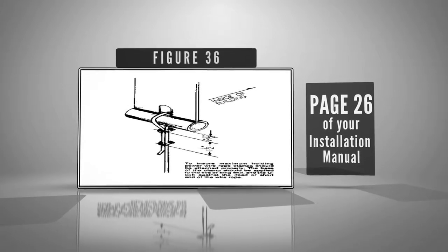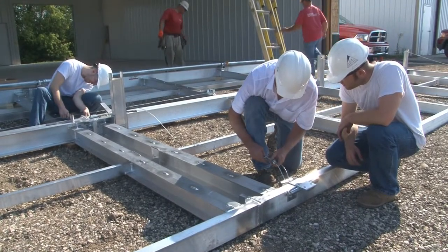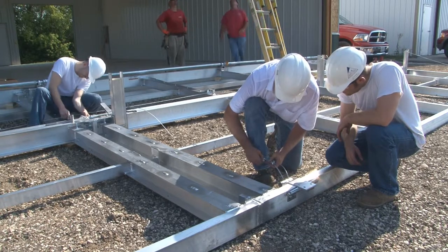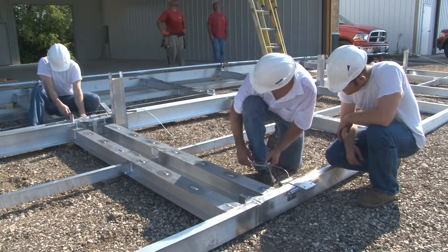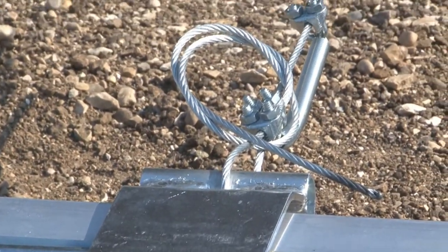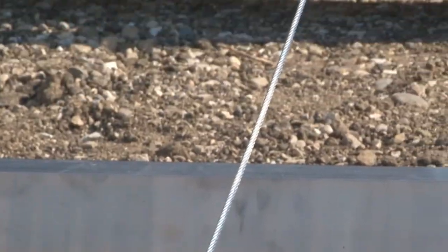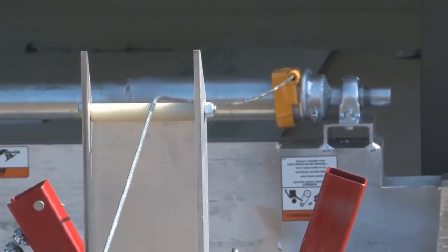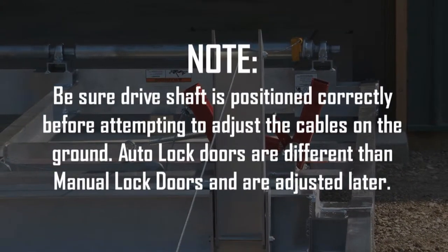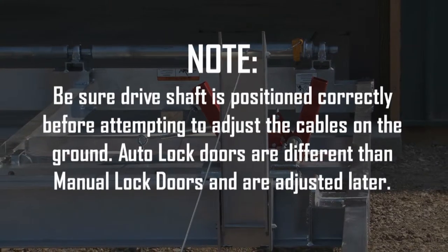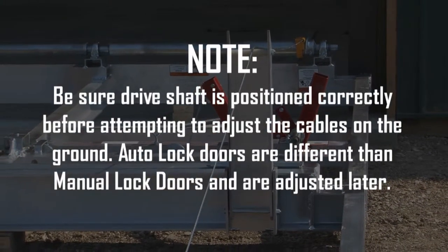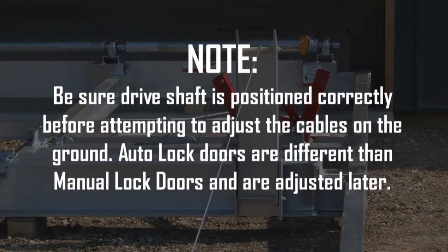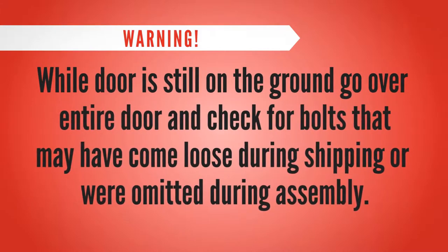If door is laid out on flat level ground and hinges will be attaching to bottom of header, the cables may be adjusted on the ground at this time. Start at one end of the door and pull lift cables so that at the kickout it will not lift over fingers but yet is not tight, putting pressure on it. Next, check dimensions on cable from door structural and set other cables the same. Note: be sure driveshaft is positioned correctly before attempting to adjust the cables on the ground. Auto lock doors are different than manual lock doors and are adjusted later. Warning: while door is still on the ground, go over entire door and check for bolts that may have come loose during shipping or were omitted during assembly.